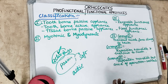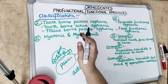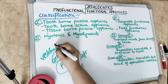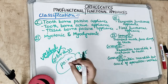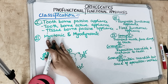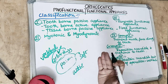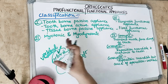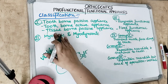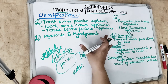Tissue-bone passive appliances are located not on the teeth but in the tissues — mostly in the vestibular region. They have very little or no contact with the teeth. For example, Frankel's regulator has little or no contact with the dentition. These are mainly vestibular appliances where the majority of the function comes from the vestibule.